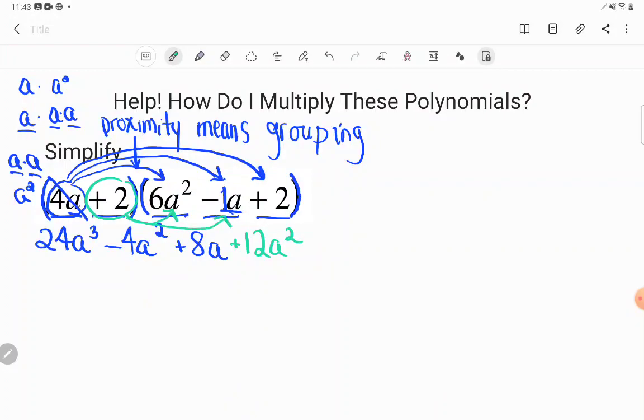Positive 2 times negative a, or like we said, negative 1a. Positive 2 times negative 1 is negative 2. And again, I just have the single a there, so we'll see that a still there. And then positive 2 times positive 2 is positive 4.